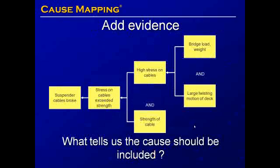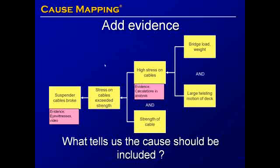Once we have added causes, we can also add evidence — information that tells us why a cause should be included in our map. We know that suspender cables broke because of eyewitness statements and video. We know there was high stress on the cables because of calculations done in the analysis of the bridge failure. We know of the large twisting motion of the deck because of eyewitness statements and video. We can add evidence wherever possible to the causes in our cause map.